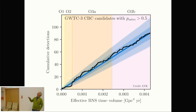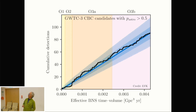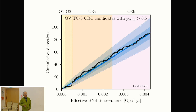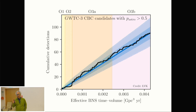As a function of the amount of four-dimensional volume scanned, we are gathering more and more detections, and this is roughly linear. We see that these sources fill this volume more or less uniformly. By the end of O3, we had gathered about 100 detections. Most of these detections are binary black holes, and I will concentrate in this talk on binary black holes, their properties, and their potential origin.